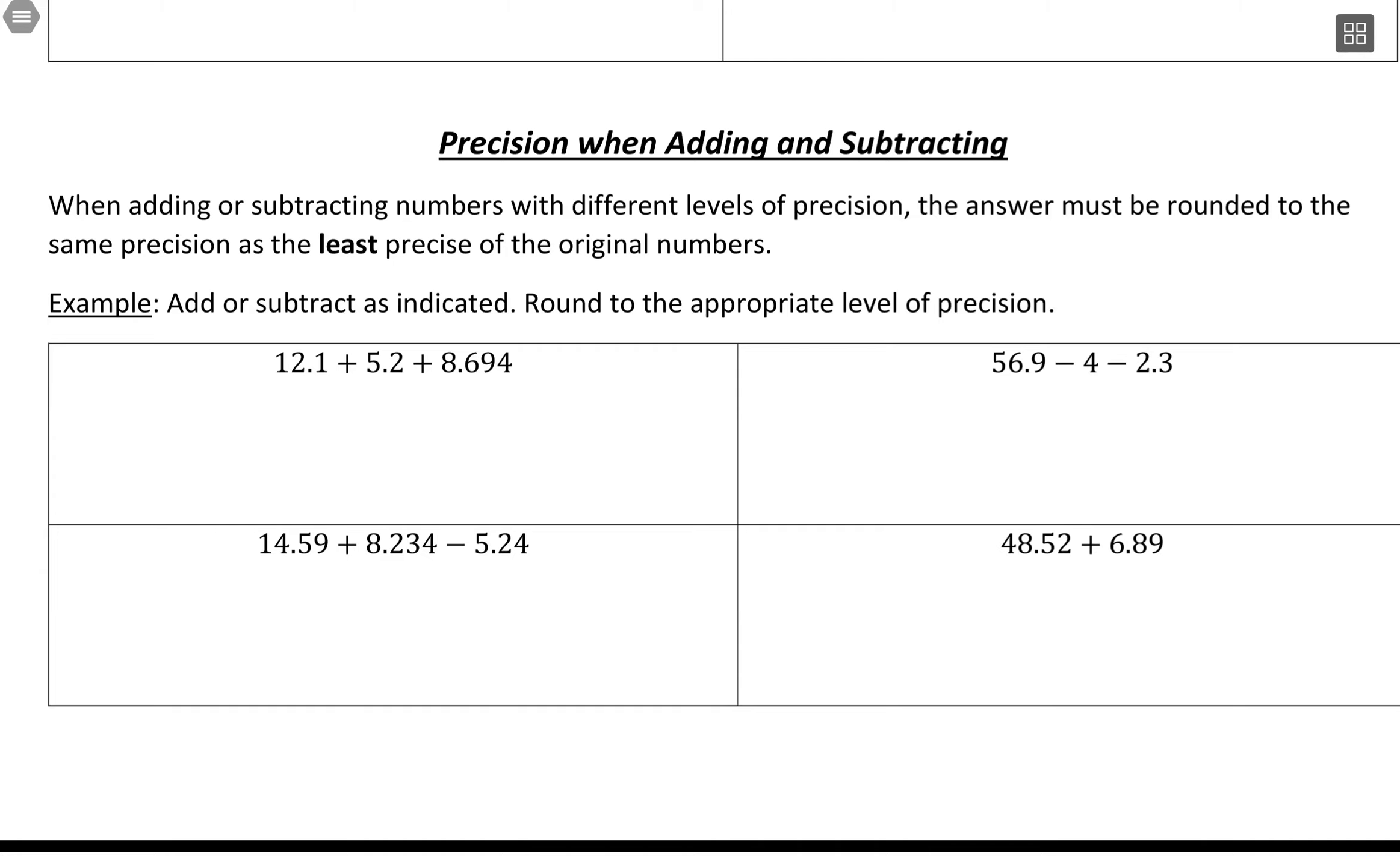When working with precision in addition and subtraction, all the numbers you're using for addition and subtraction, when you get your calculation and have this value you want to round, you use the least precision of the original numbers. Keep in mind that precision relates to place value, but it's a mixture of significant figures and place value.